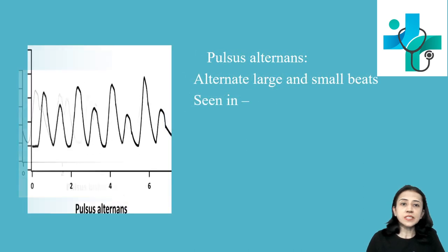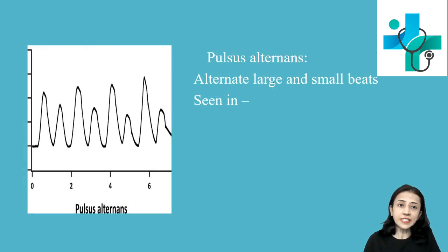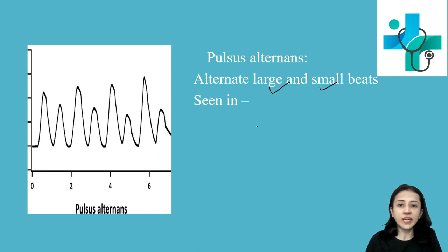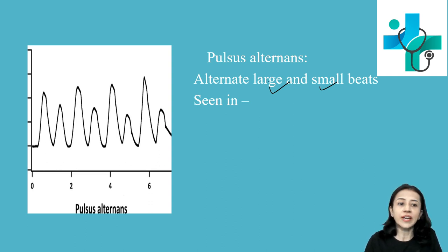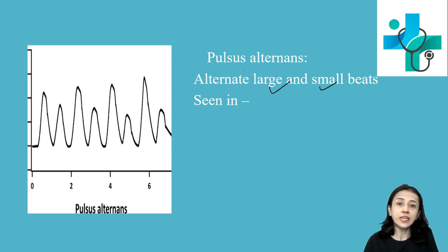Next is pulsus alternans, where alternate large and small pulses are found. It is seen when the left ventricle is severely damaged, such as in myocardial infarction. An increase in end-diastolic volume results in a large pulse, followed by a ventricle that is not able to pump adequately, resulting in a small pulse. So strong and weak contractions occur alternatively, producing pulsus alternans.